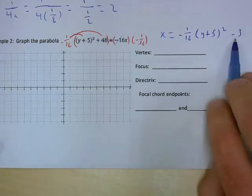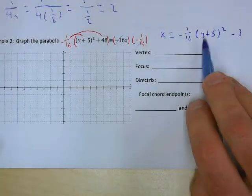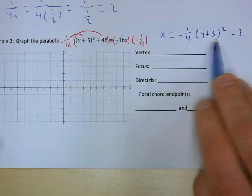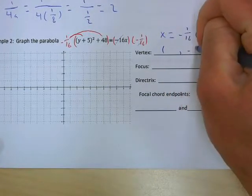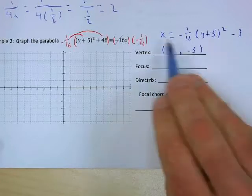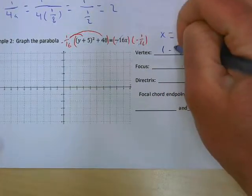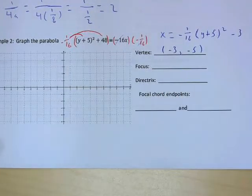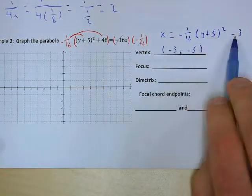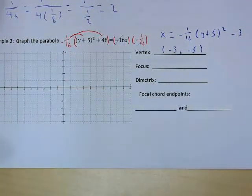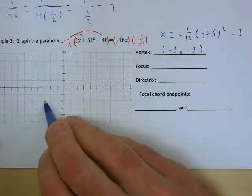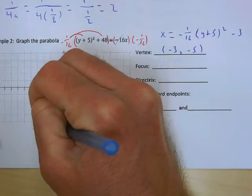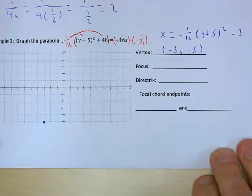What's the vertex? You might think (-5, -3), but be careful. We're plugging -5 in for y, so the vertex has a y value of -5 and x value of -3. When y = -5: (-5+5)² = 0, times -1/16 is 0, minus 3 is -3. So our vertex is (-3, -5). Note: when it's x = instead of y =, your x and y values are switched.